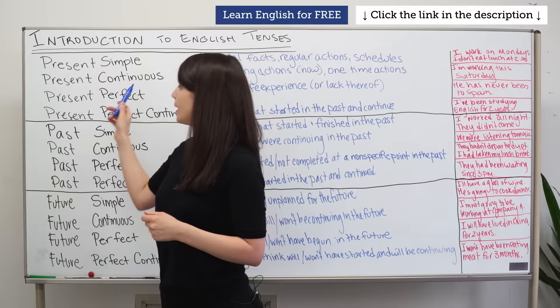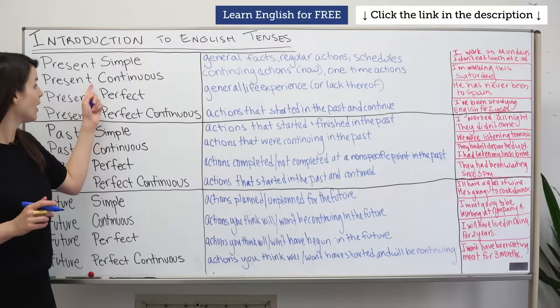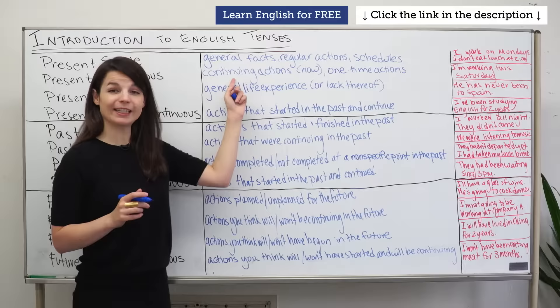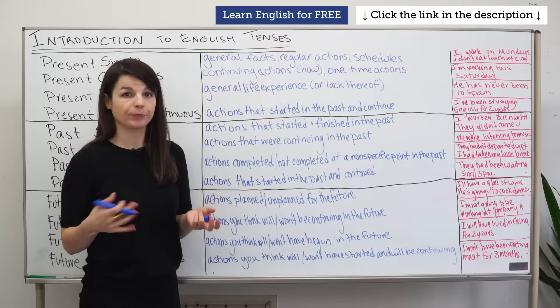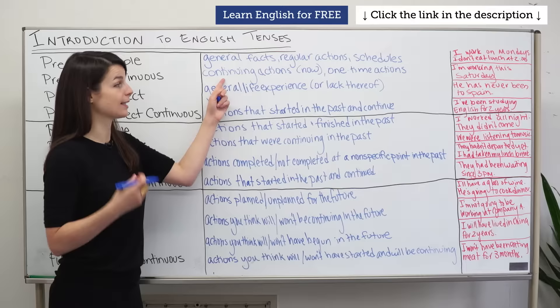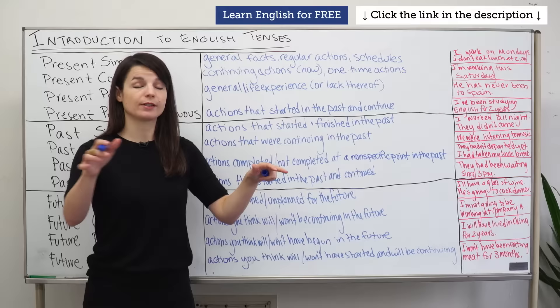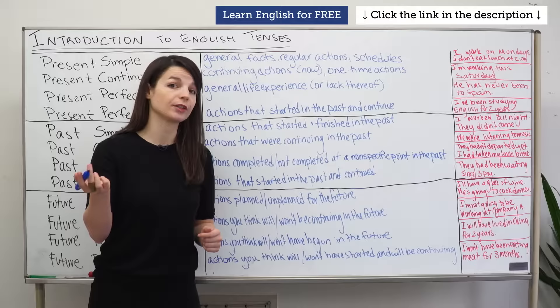The second tense is the present continuous tense. We use present continuous for continuing actions — actions that are happening now. For example, I'm teaching, I'm standing, I'm speaking. We also use it for trends, so things happening in your society right now, like 'that TV show is becoming popular' or 'the world is getting warmer.'